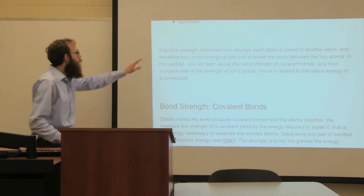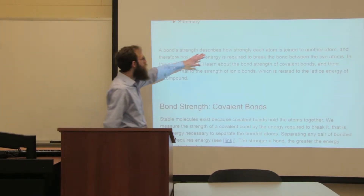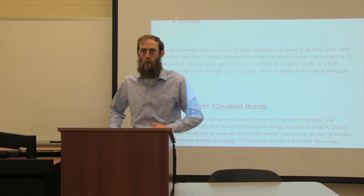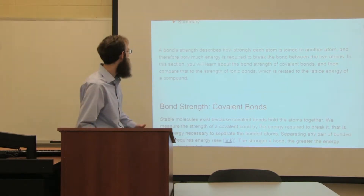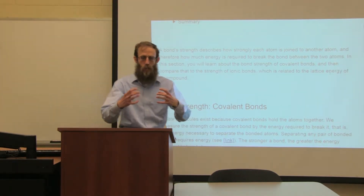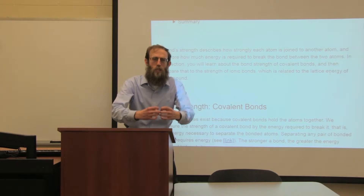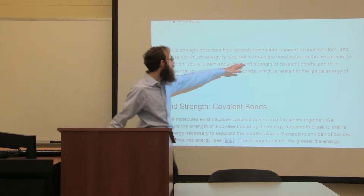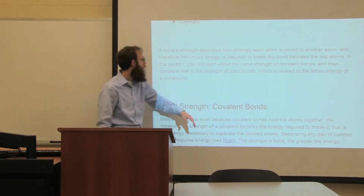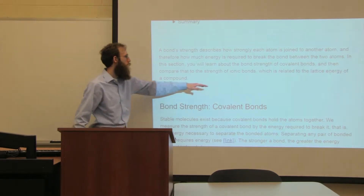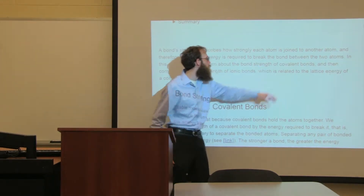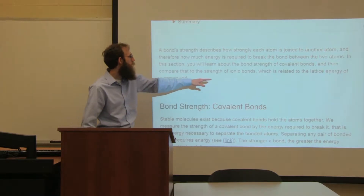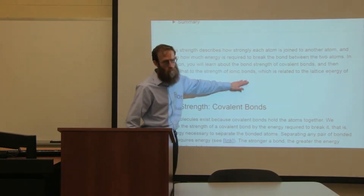A bond's strength describes how strongly each atom is joined to another atom. The strength of the bond is how much energy it is going to take to break those atoms apart — to break the bond. So what we're going to be learning about is the bond strength of covalent bonds, and we will compare that to the strength of the ionic bonds.